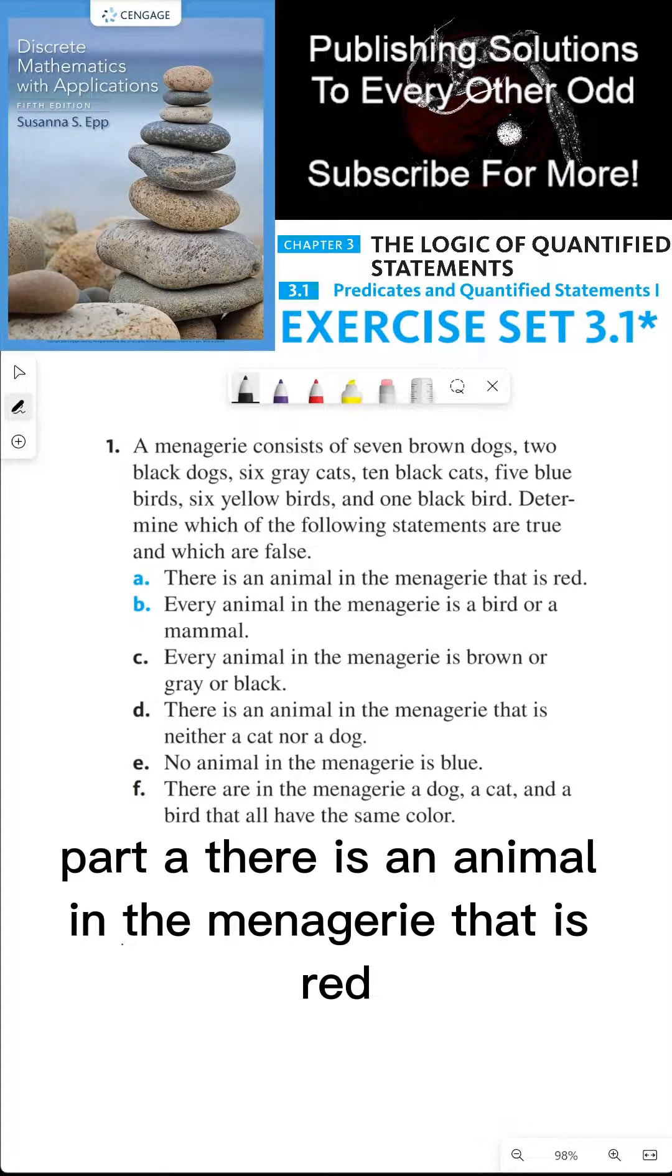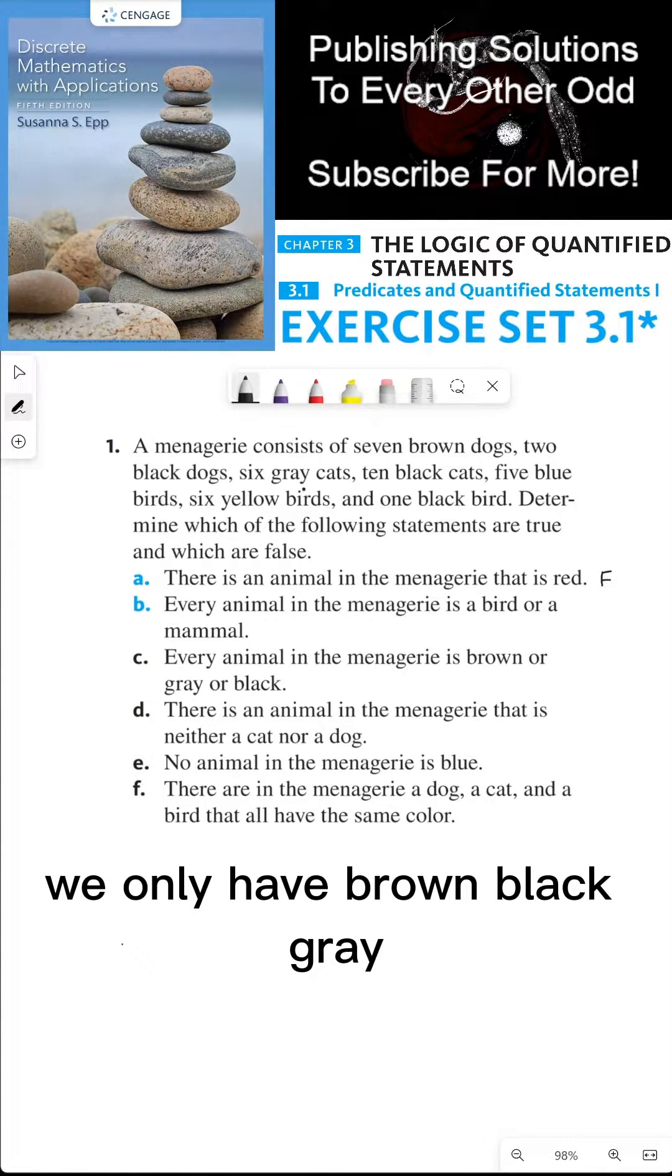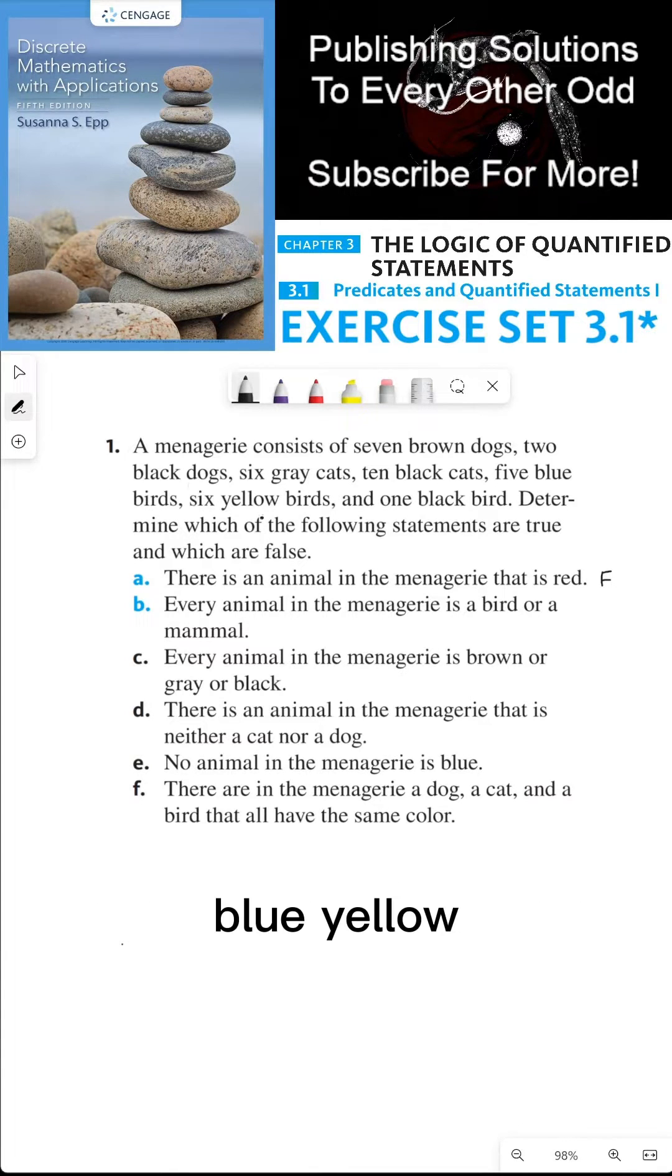Part A. There is an animal in the menagerie that is red. This is definitely false because there are no animals listed as red. We only have brown, black, gray, blue, yellow, and that's it. So there's no red.